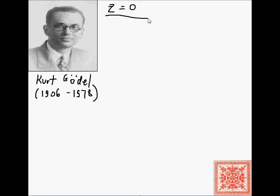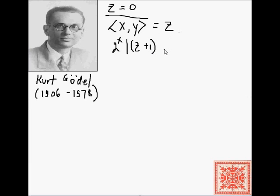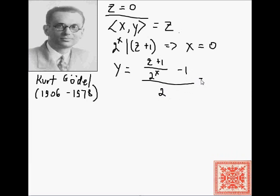Let's go over a couple of examples. Take z = 0. We're looking for the pair of x and y equal to zero. We look for the largest x such that 2^x divides z+1 = 1, so x = 0. Then y = (1 / 2^0 − 1) / 2 = (1 − 1) / 2 = 0. So the pair of (0, 0) maps to zero, which is natural and somewhat expected.